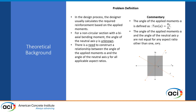The design process usually involves calculating the required reinforcement based on the applied moment. We have Mx and My, and we can get the angle alpha. In the commentary section, we show that the tangent of alpha is My over Mx — that is, the moment about the y-axis divided by the moment about the x-axis. For non-circular sections, biaxial bending introduces a new aspect to the modeling problem, which is the angle of the neutral axis gamma, which is unknown.